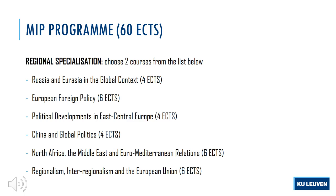Some of you perhaps want to gain specialized knowledge on certain places in the world — well, you're at the right program for that. The Master of International Politics doesn't only offer you thematic specializations, it also gives you the possibility to zoom in on certain regions in the world. The following list of courses gives you an overview of what's possible, and you can choose two courses from the list presented here.